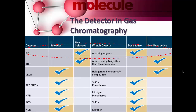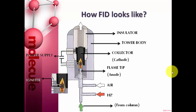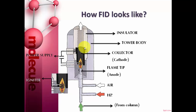The detector we are using is the FID. The FID is a non-selective detector which detects anything organic, and it uses a destructive process. The FID works by directing the gas phase output from the column into a hydrogen flame. A voltage of 100 to 200 volts is applied between the flame and an electrode. That electrode is called a cathode, while another electrode placed away from the flame is called the anode, which is usually placed below the flame.